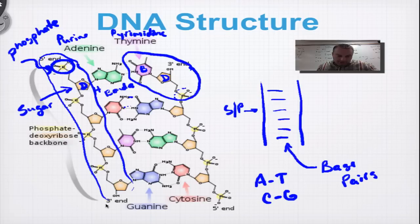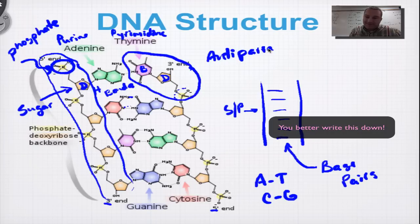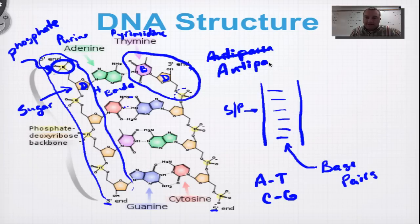Now, one other thing I want you to notice here. You see these numbers? Three prime and five prime. I'm going to keep it really easy for you to remember. These guys are, or I'm sorry, the strands of DNA, the backbones. They're anti-parallel. Think of like a two-way street. Somebody's going south. Somebody's going north. I'm going to write this word down here for you. It's anti-parallel. I knew I was going to misspell that. Let's try that again. Anti-parallel.